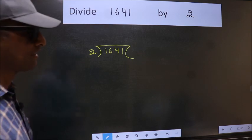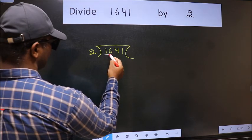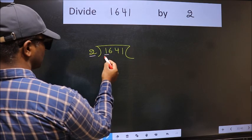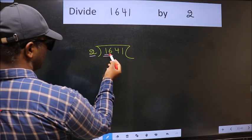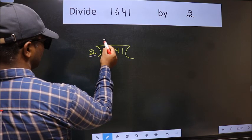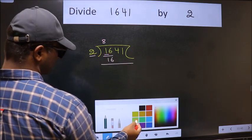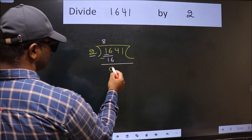Next, here we have 1 and here 2. 1 is smaller than 2. So we should take 2 numbers, 16. When do we get 16 in 2 table? 2 times 8 is 16. Now we should subtract. We get 0.